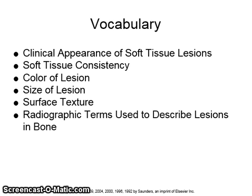The vocabulary is extremely important in describing the clinical appearance of soft tissue lesions, soft tissue consistency, the color of the lesion, the size of a lesion, the surface texture, and radiographic terms used to describe lesions that occur in bone.